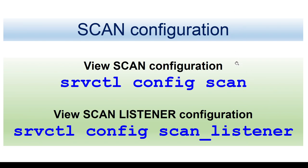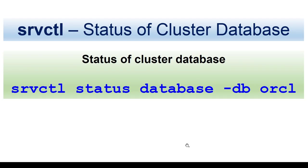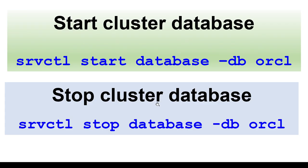If you want to see information about SCAN, you can use SRVCTL config scan — it will give you the SCAN IPs and SCAN information. If you want to see the SCAN listener, you will use config scan listener. If you want to see the status of your database, you will use SRVCTL status database with the -db unique name of your database. If you want to start the database, you will use start database; to stop it, use SRVCTL stop database.